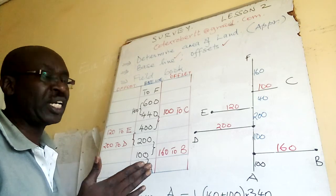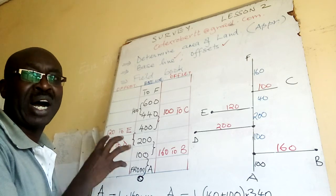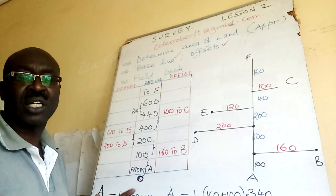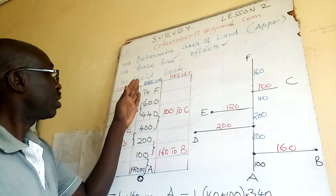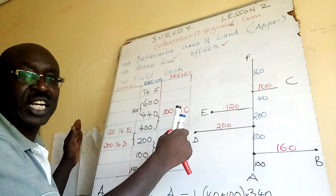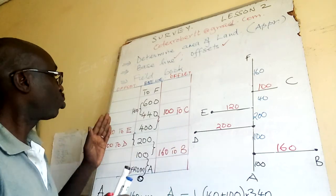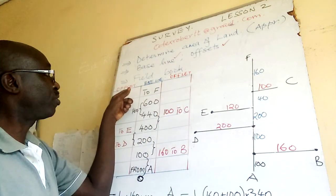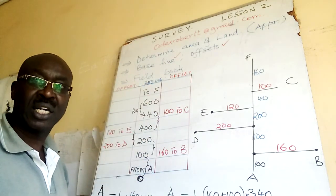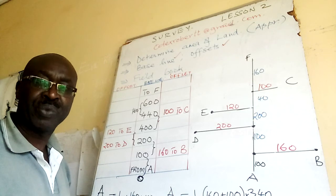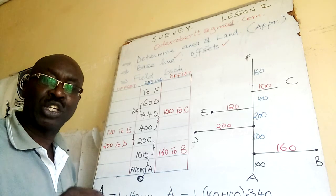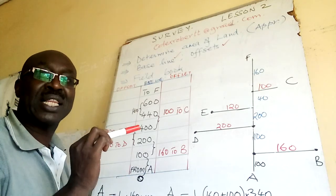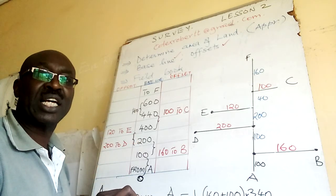The diagram is represented by dimensions in the field book. The field book has two major parts: the baseline in the middle and then offsets on the side. Whatever is written in red are offsets; the middle figures represent the baseline.